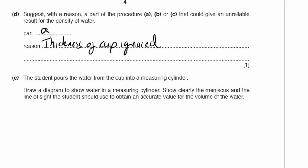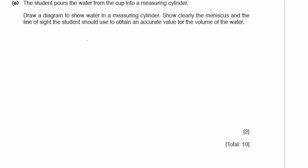Part E. The student pours the water from the cup into a measuring cylinder. Draw a diagram to show water in a measuring cylinder, show clearly the meniscus and the line of sight the student should use to obtain an accurate value. First, let's draw the side of a measuring cylinder and put little graduations in it. Now let's draw in some liquid, some water. I'm very clearly drawing in the meniscus at either side. Now how would I measure this? At 90 degrees, I would have an eye. So I'm looking at the scale at 90 degrees. I'm just going to label meniscus.